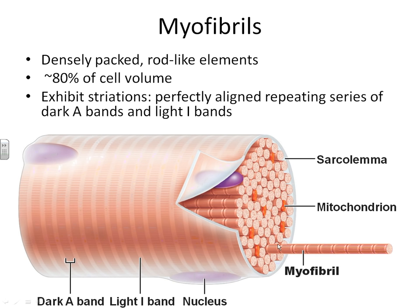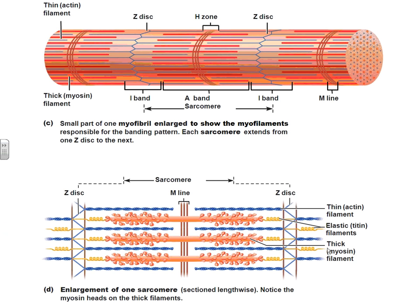Now we're going to blow up just the picture of one of these myofibrils and look at some structures. The myofibril is separated into individual functional units called sarcomeres. A sarcomere extends from one Z-disc to another. Attached to each Z-disc is what we call the thin filaments, shown here in blue. In between the thin filaments, we have the thick filaments shown in red. The area where you have a combination of actin thin filament and myosin thick filament - thin, thick, thin, thick - is the area where the muscle myofibril will appear darker. The darker area is called the A-band. The A-band is the area where you have thin filament and thick filament.